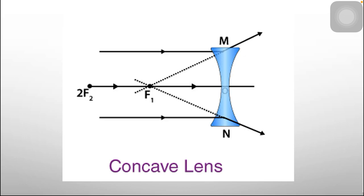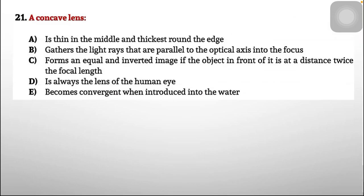The concave lens is not the lens of the human eye. Secondly, light rays after passing through it disperse. Moreover, the virtual image is formed at the back of the lens and is not inverted. Therefore, the correct option is A: thin in the middle and thickest round the edge.